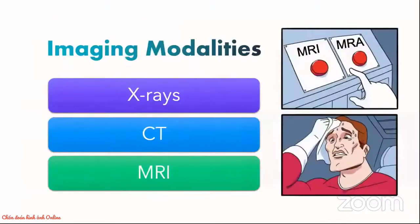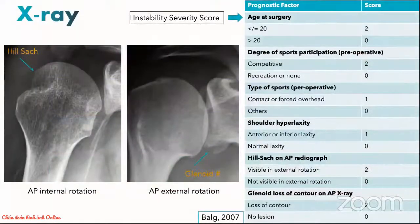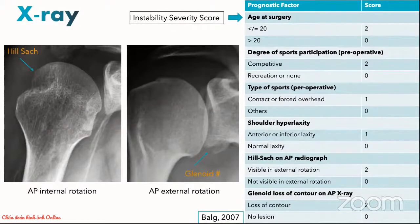Next, we move on to the choice of imaging modalities. There are three imaging modalities available for assessment of shoulder instability: X-rays, CT and MRI. X-rays are useful in detection of associated bony injuries post anterior inferior glenohumeral dislocation. In fact, they are a prerequisite criteria in the instability severity score which is used by orthopedic surgeons to decide whether the patient goes for arthroscopic repair or open surgery such as the Latarjet procedure.